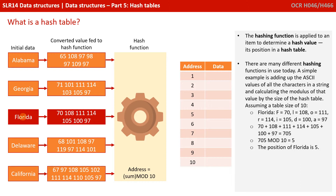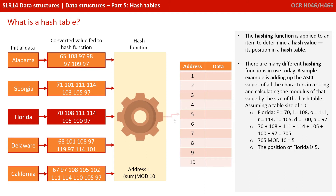The hashing function is applied to an item to determine a hash value — its position in a hash table. Now, there are many different hashing functions in use today. A simple example could be to add up the ASCII values of all the characters in a string and calculate the modulus of that value by the size of the hash table.